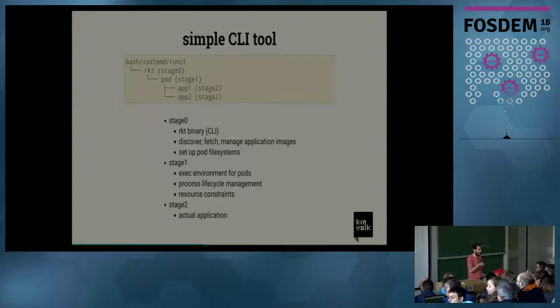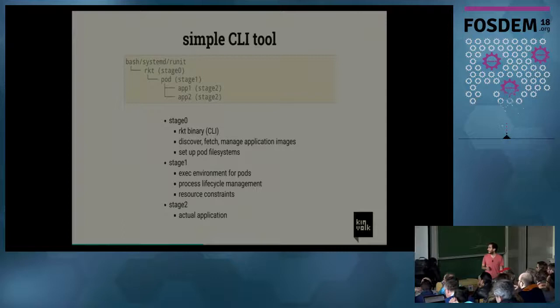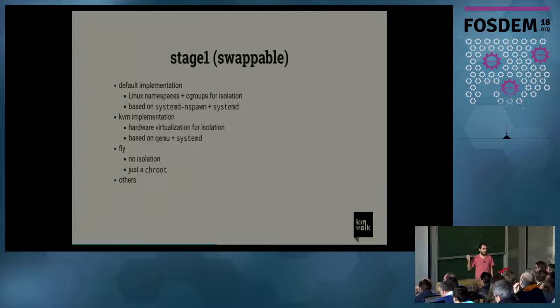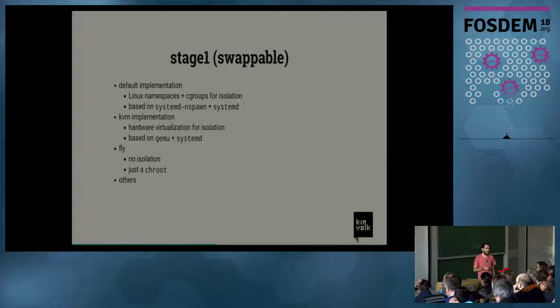Something will start Rocket — might be systemd, bash, or a unit. Rocket will then start a pod. There are three stages: stage 0, stage 1, and stage 2. Stage 0 is the Rocket binary CLI that does image fetching and renders the image in the filesystem. Stage 1 is the actual container environment that pods live in — it does pod lifecycle management and contains the resources. Stage 2 is just your application, whatever you run. One cool thing about stage 1 is that it's pluggable — the default uses Linux namespaces and cgroups, based on systemd-nspawn, and inside that container we run systemd again to manage all the applications in the pod.